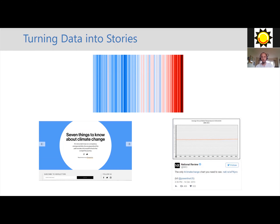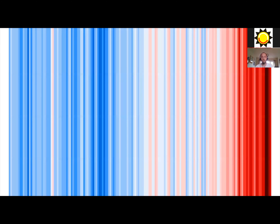I wanted to share three stories about climate change, which are ultimately based on the same data but telling three very different stories. The first visualization is known as the warming stripes, created by Ed Hawkins. This shows over time, from left to right, over the last 150 years, how much warmer the world has got, using global average temperature represented by color. Light blues are lower temperatures and darker reds are higher temperatures. You can clearly see as we move through time the world has got much hotter. This is a very simple image, but it tells a really clear story about climate change and global warming.